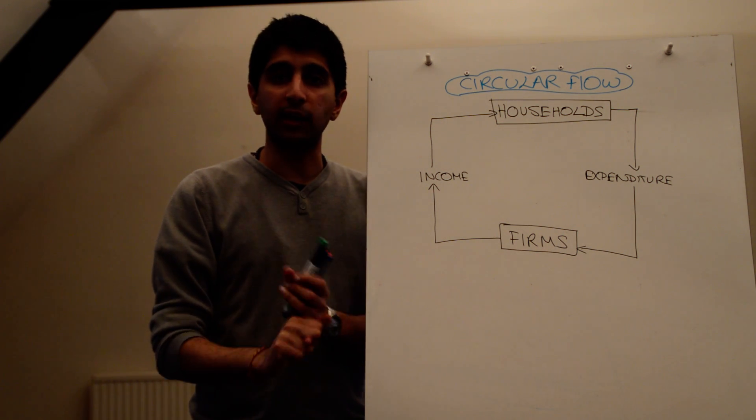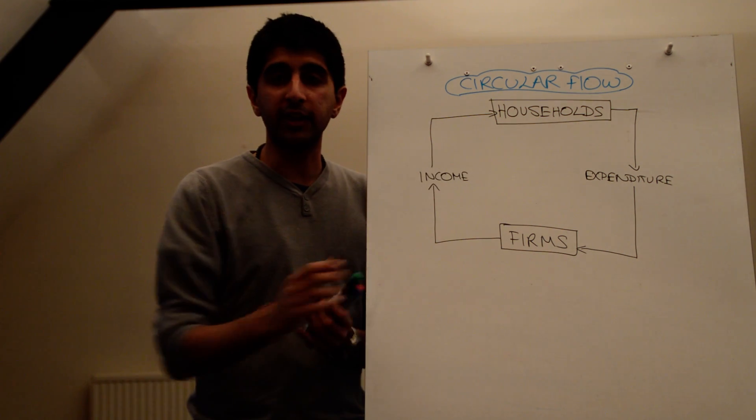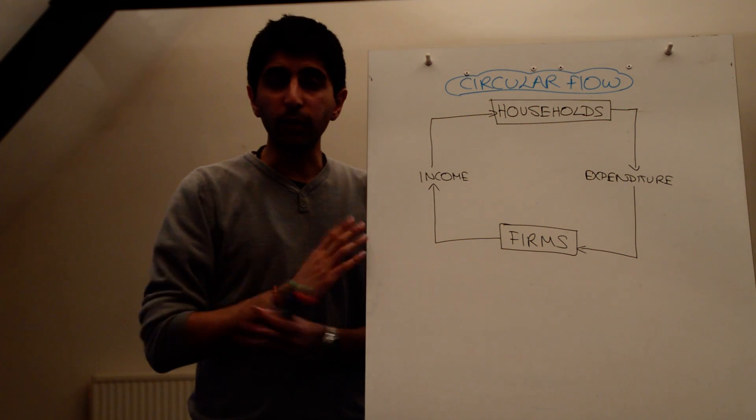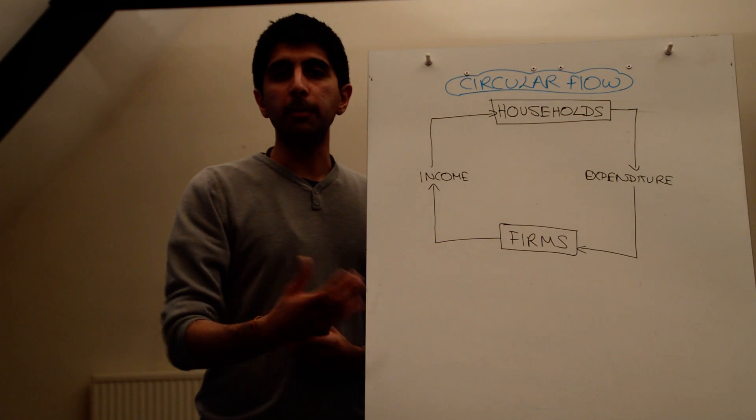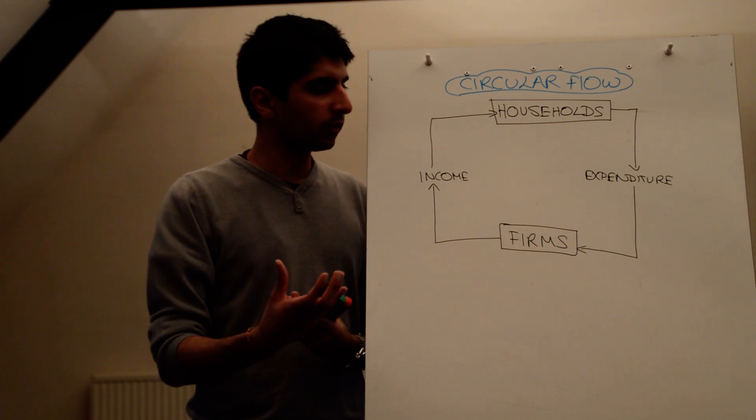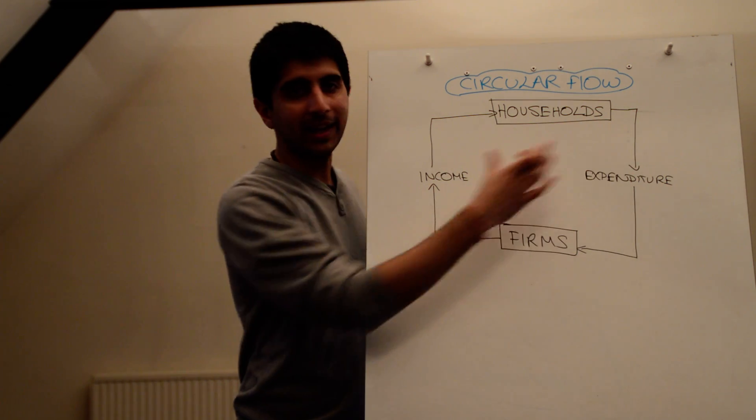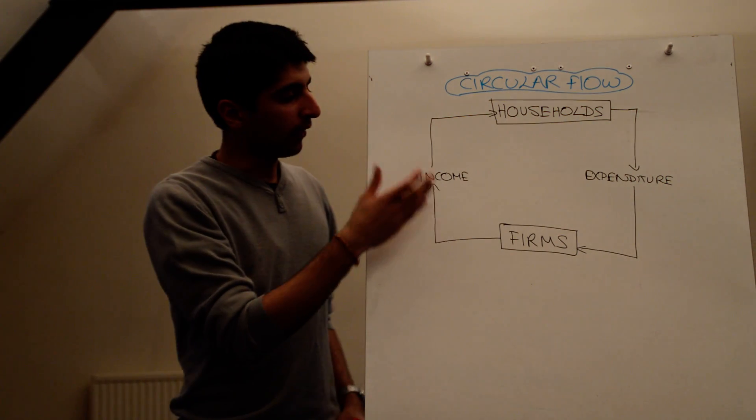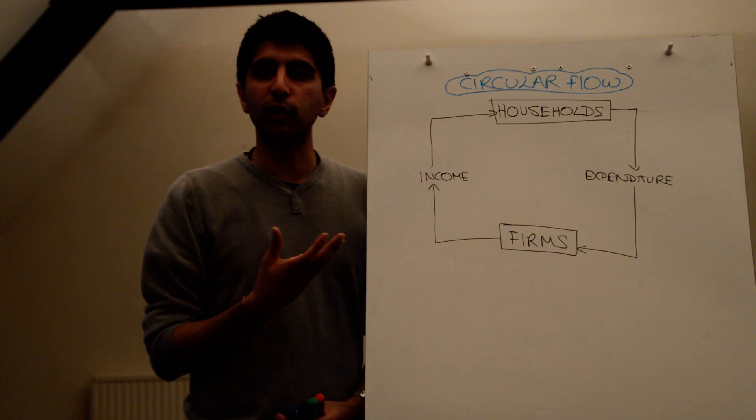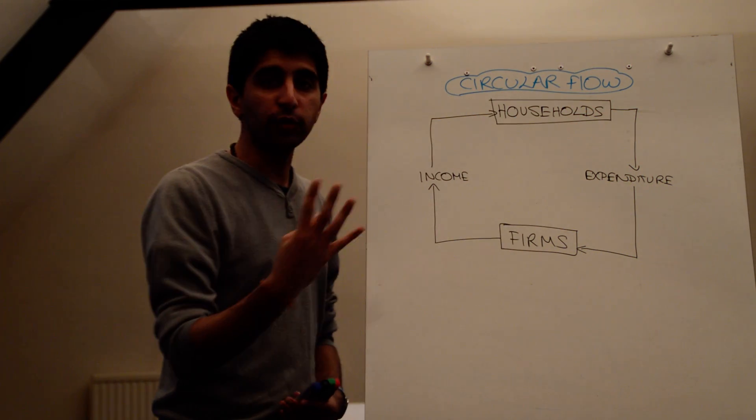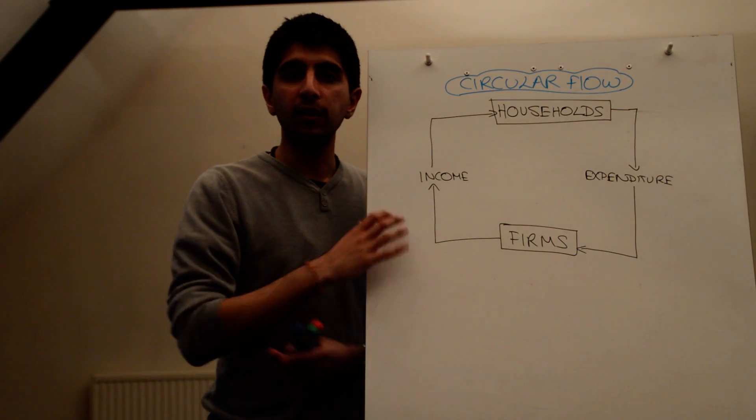We've got the government we need to include. The government spends money, the government taxes people. We also need to consider the rest of the world. We trade. Money enters our country by exports, and money leaves the country by imports. There are lots of different ways in which money can enter and leave the economy. So we need to open up this model now and consider four sectors, bringing the government, bringing the global economy.